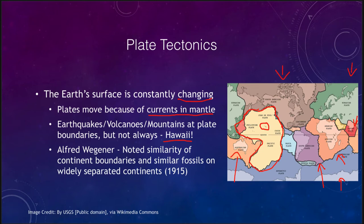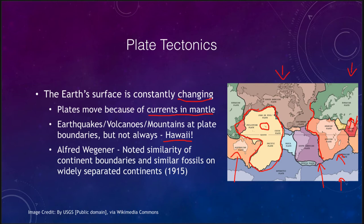As these plates continually move, features will change. When plates collide together, we can form mountains and build up mountain ranges and volcanoes. That happens with the Indian plate, which is moving and colliding into the Eurasian plate — as those two continental plates collide, they are actually forming the Himalayan mountains. Right down the middle of the Atlantic, we have the Mid-Atlantic Ridge, which is separating various plates as they move across, so new crust is being created at that central portion.